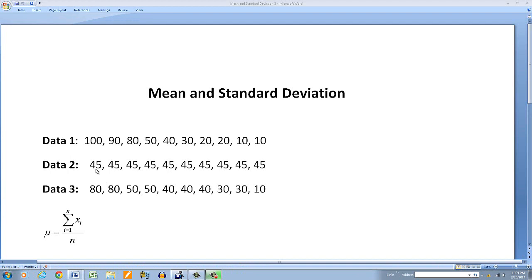Data two represents the scores on test two. And data three, the scores on the third test.